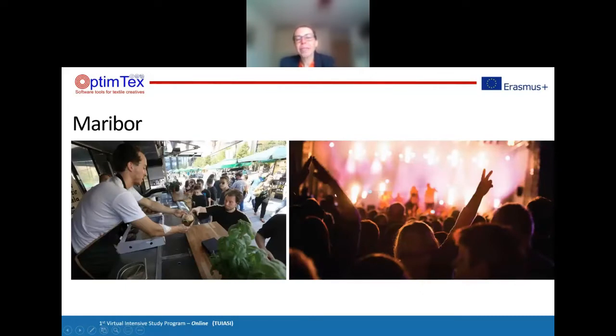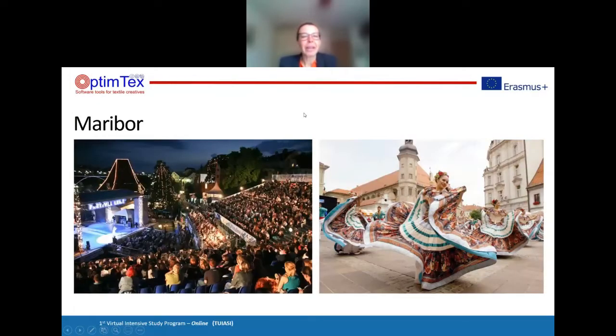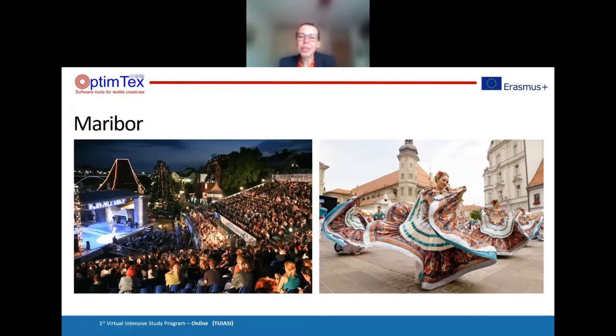Maribor is a very social city. We have theaters, an opera house with very famous ballet and opera ensembles. The biggest and most famous festival in Maribor is called Lent, starting at the end of June when primary and secondary schools finish. It is the biggest festival in Maribor, attracting very famous artists from all over the world.